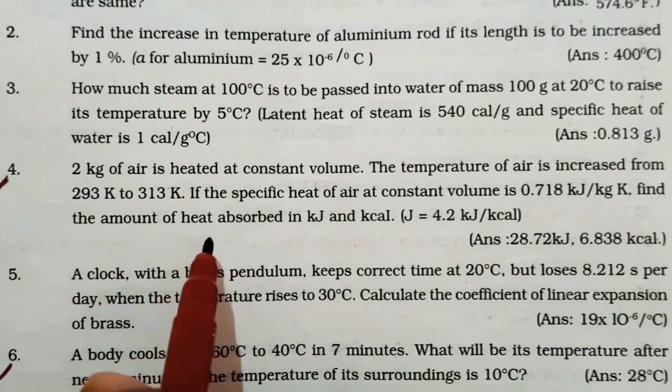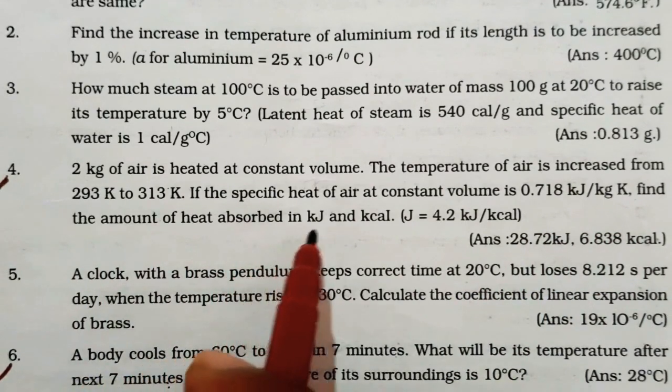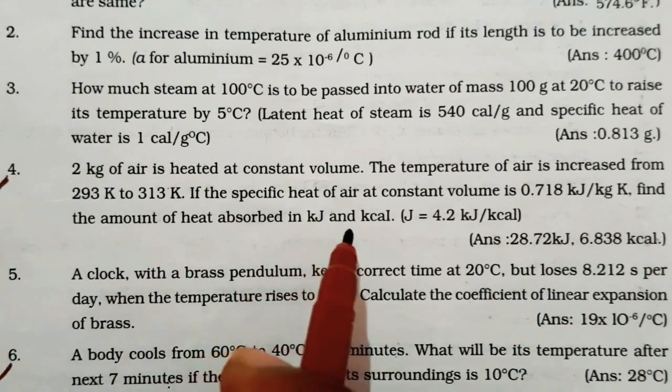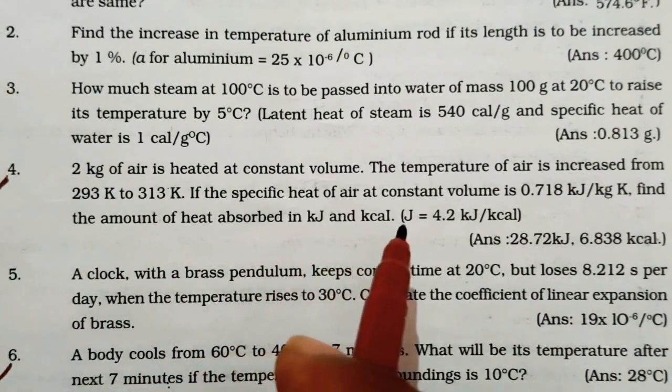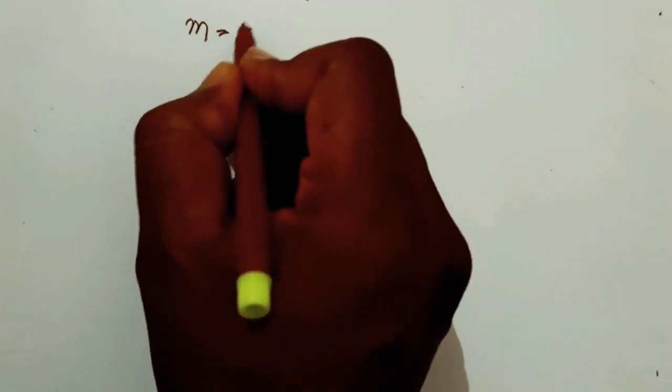Find the amount of heat absorbed in kJ and kcal. In this problem, the mass of the air is given, that is M is equal to 2 kg.